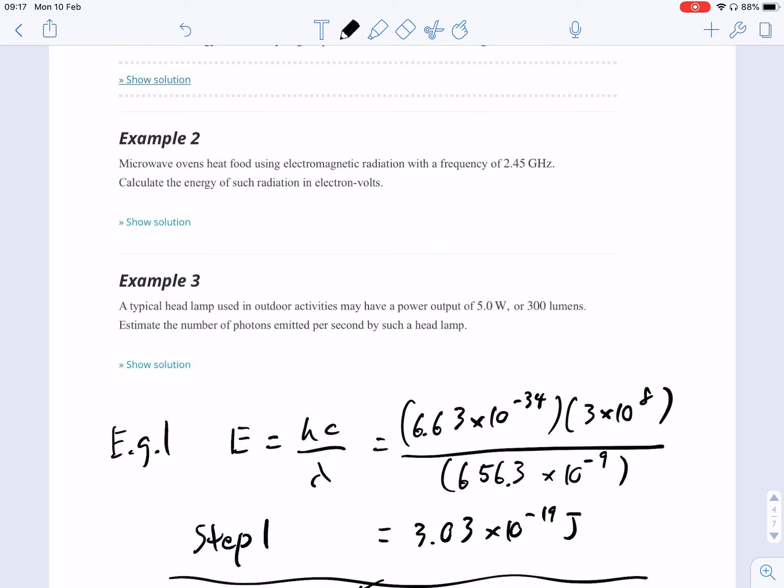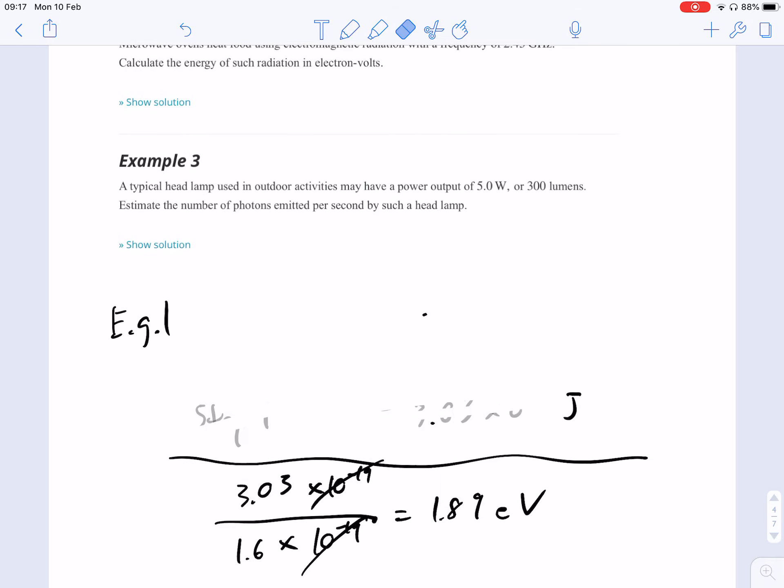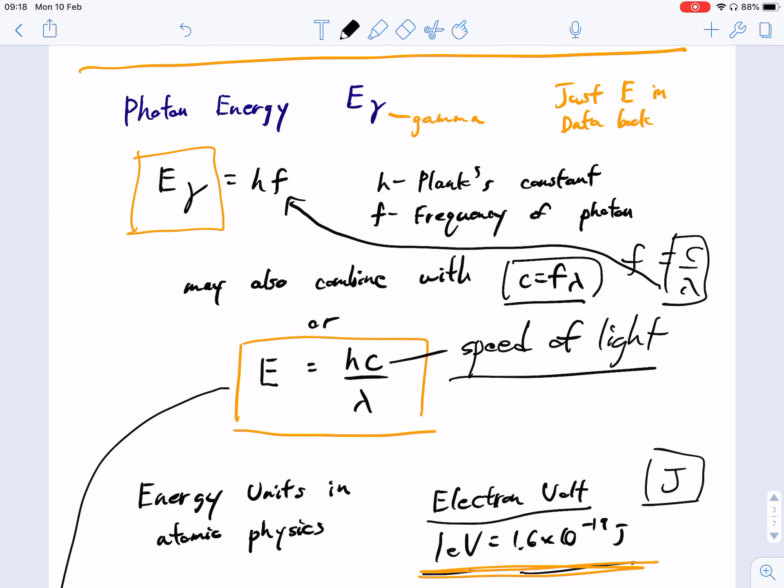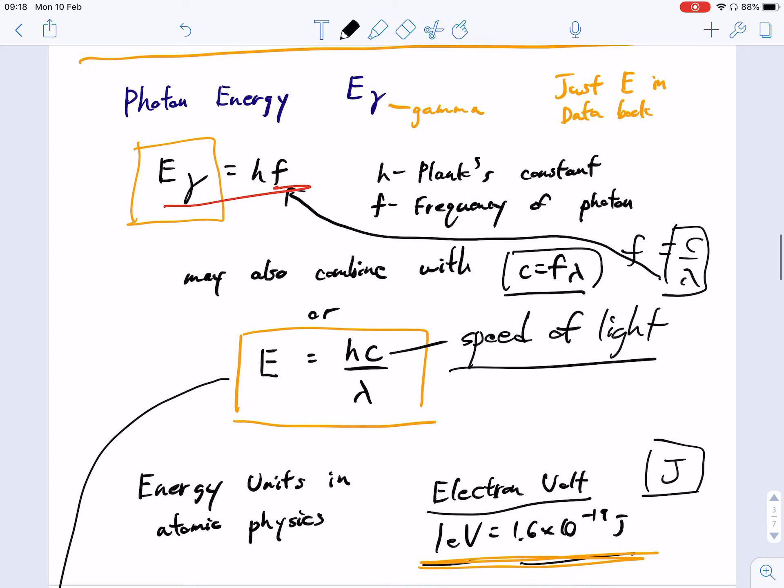Example number two, microwave oven heats food using electromagnetic radiation of 2.45 gigahertz. So it says calculate the energy of such radiation. Again, give our units in electron volts. So let's clean this up a little bit first. So this time we're given the frequency. Which means we can actually shorten our work a little bit. Example number two.